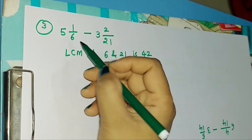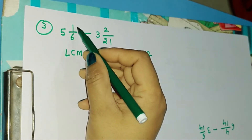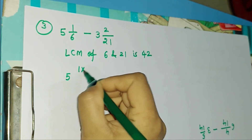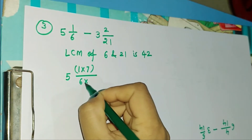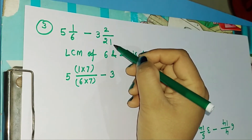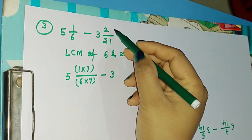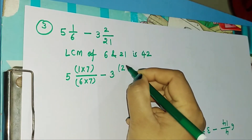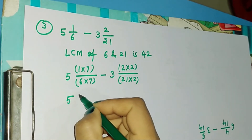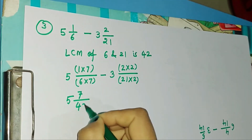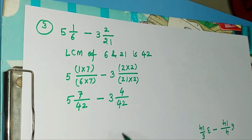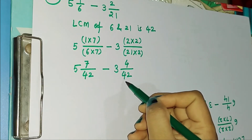The LCM of 6 and 21 is 42. To make the denominator of the first fraction 42, we need to multiply both numerator and denominator by 7. So the whole part stays as 5, and 1 times 7 gives 7 over 42. For the second fraction, to make the denominator 42, we multiply both numerator and denominator by 2. So 2 times 2 is 4, and 21 times 2 is 42. Now we have 5 7/42 minus 3 4/42.